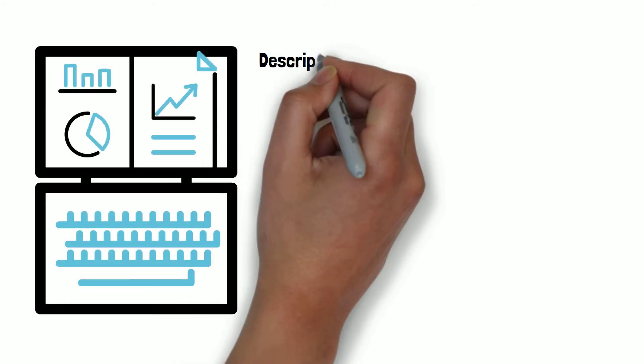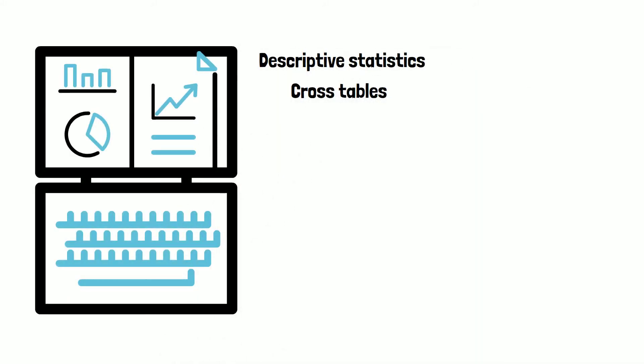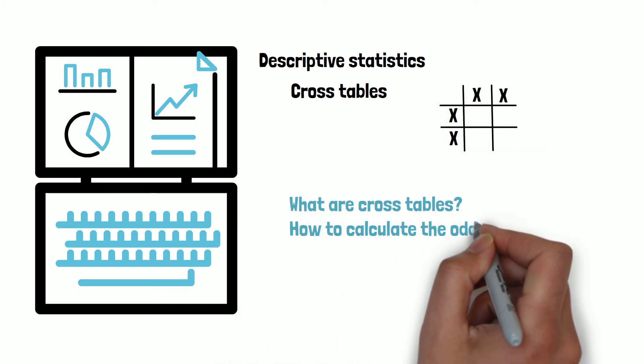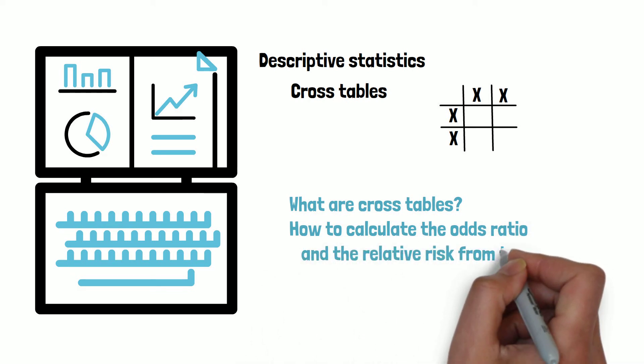When creating an overview of the data in the frame of descriptive statistics, cross tables are often one of the first choices. In today's video we want to explain what these are and how to calculate the odds ratio and the relative risk from them.